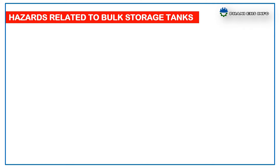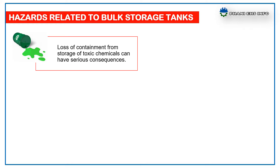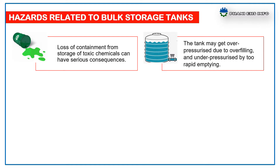Coming to the hazards related to Bulk Storage Tanks, there are different types of hazards. Loss of containment for storage of toxic chemicals can have serious consequences. The hazard due to the release of toxic chemicals was demonstrated at Bhopal, which was the worst disaster in the chemical industry. Depending on the material and type of storage, rarely a tank fails catastrophically due to mechanical defects. The tank may get over-pressurized due to over-filling, too rapid filling, and under-pressurized by too rapid emptying.